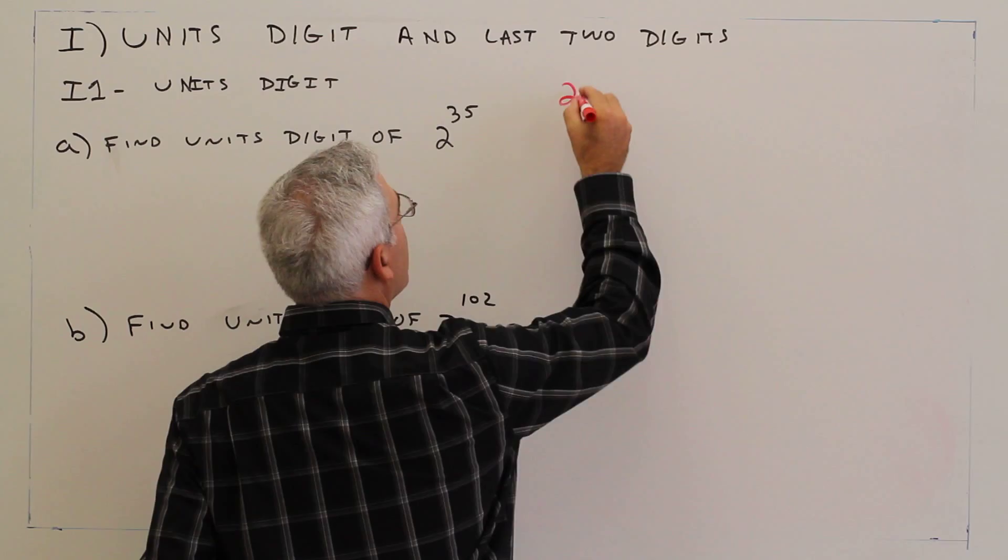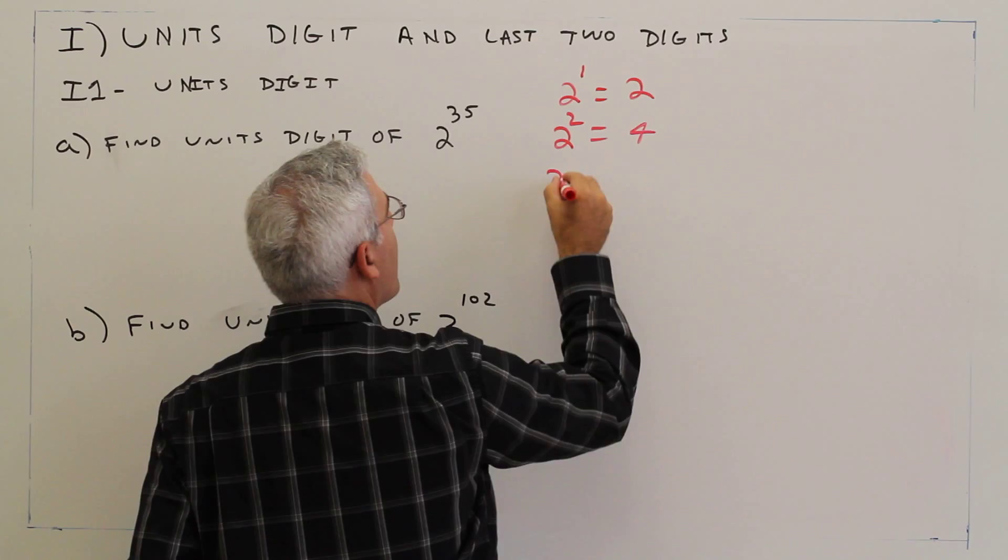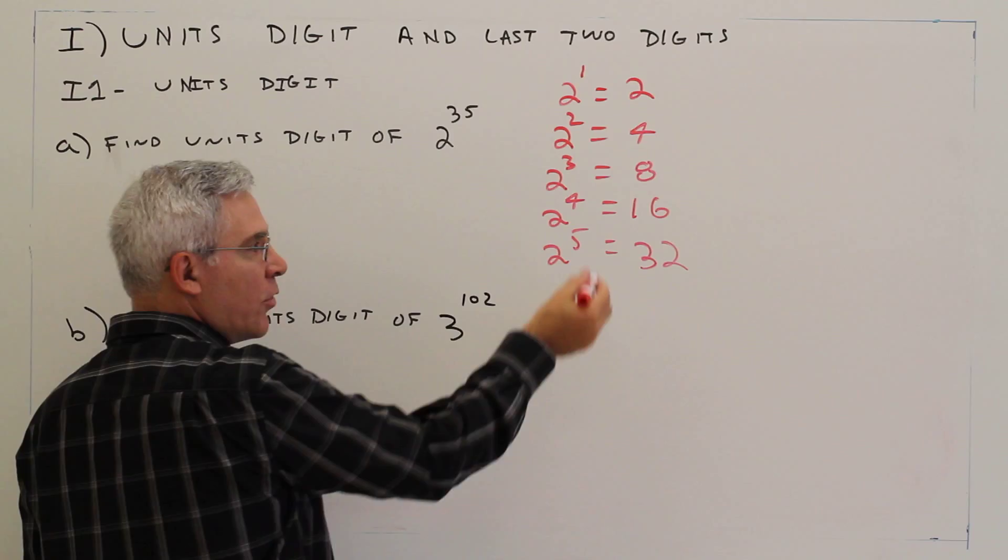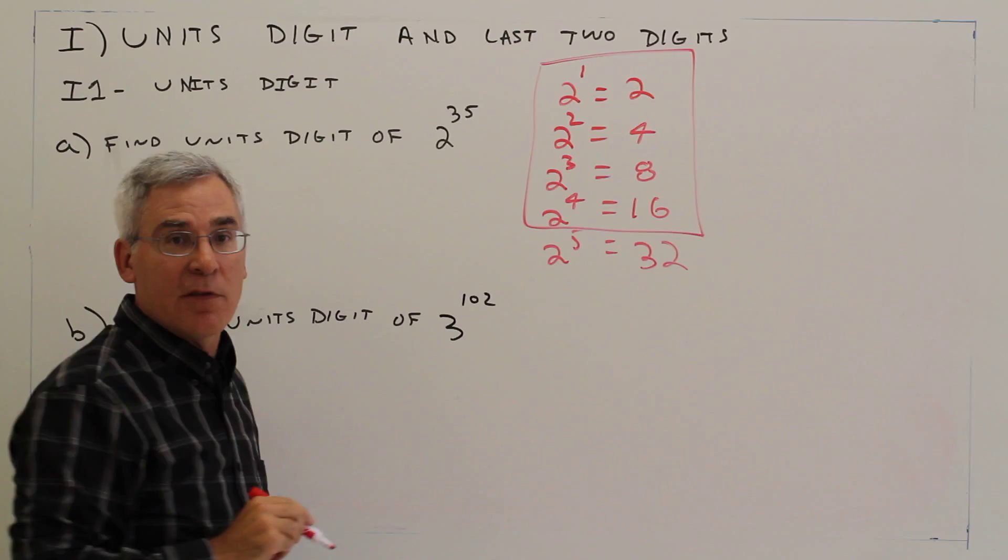So 2 to the 1 is 2, 2 squared is 4, 2 cubed is 8, 2 to the 4th is 16, 2 to the 5th is 32, and the pattern is going to continue in cycles of 4.